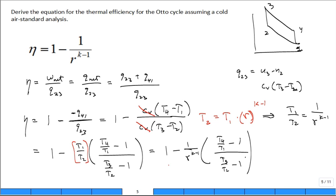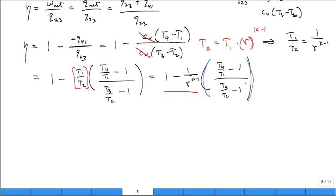And now we have what we're looking for. All I have to show is what's in this parenthesis right here is 1. It's unity. So what we do is, you think about it this way: is T 4 over T 1 equal to T 4 over T 3, T 3 over T 2, T 2 over T 1. Is that true?